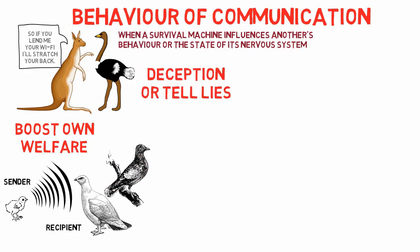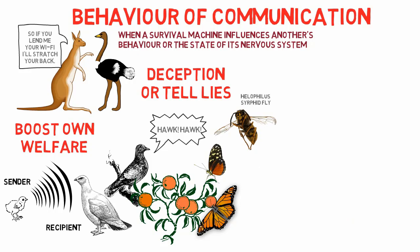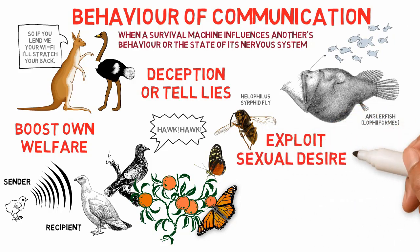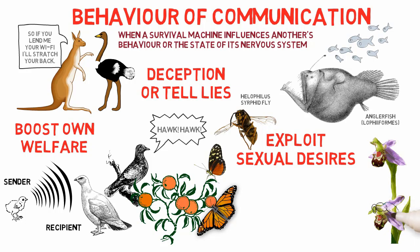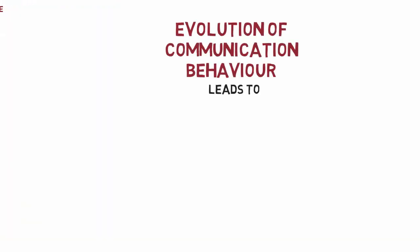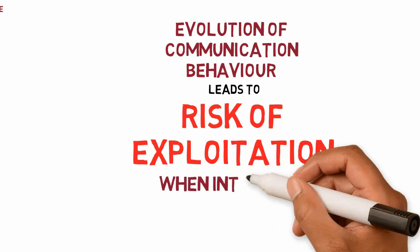Communication behavior can also be used to deceive or tell a lie. For example, a bird using a 'hawk' alarm signal to fool others into fleeing and eating all the food. Other examples include mimicry in butterflies, flies mimicking wasps to fool predators, the angler fish wriggling a worm-like bait to attract small fish, bee orchids resembling female bees to induce male bees to pollinate them, and the female Photuris firefly luring male Photinus fireflies by imitating their flashing code in order to eat them. Dawkins warns that selfish exploitation, lying, and deceptive practices will arise whenever the interests of genes diverge.